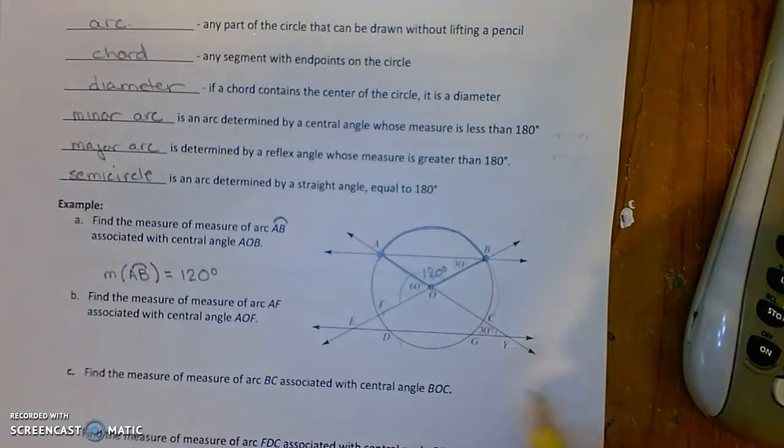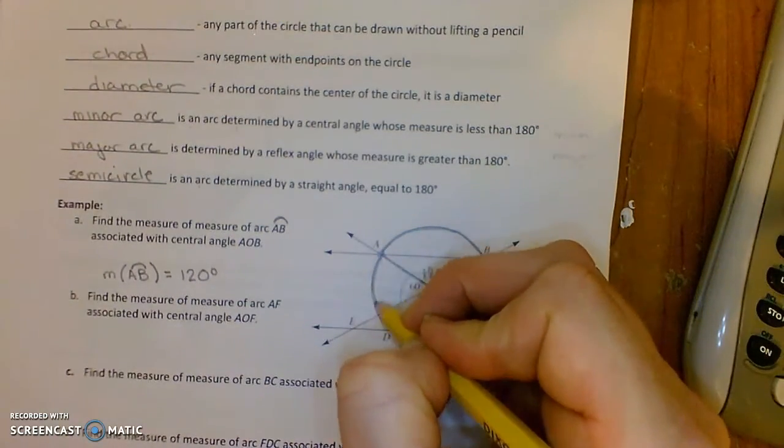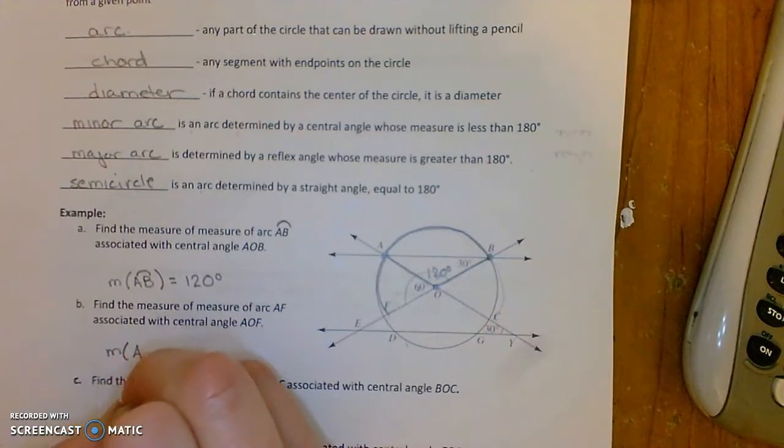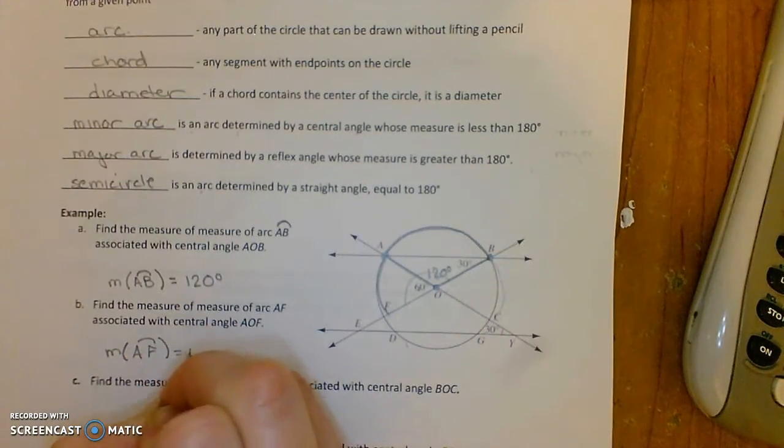And also the measure of arc AF here is the same as the measure of that central angle. So the measure of arc AF is going to be 60 degrees.